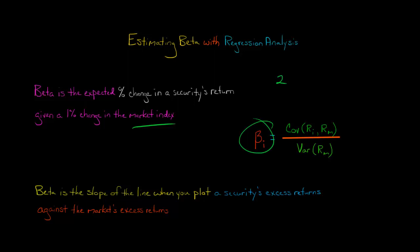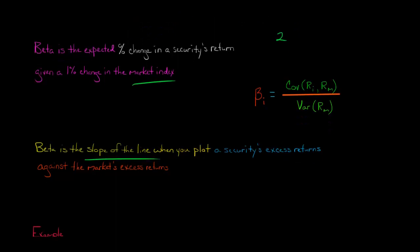But another way of thinking about it, instead of just the covariance divided by the variance, you can also think about beta as a coefficient in a regression. You can think about it as the slope of the line when you plot a security's excess returns against the market's excess returns. And when I say excess returns, I mean returns over and above the risk-free rate.